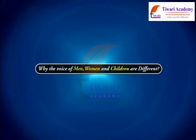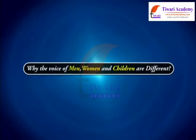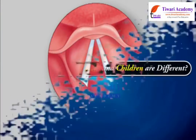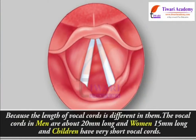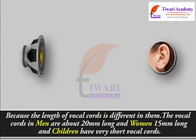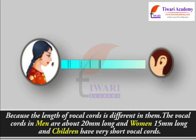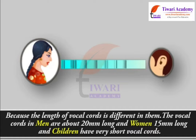Why are the voices of men, women and children different? Because the length of vocal cords is different in them. Vocal cords in men are about 20 mm long, in women 15 mm long, and children have very short vocal cords.